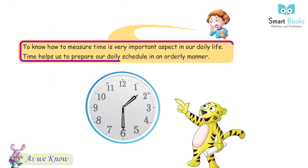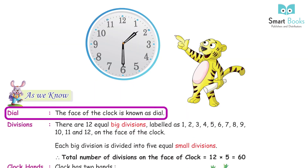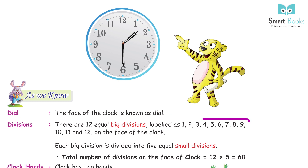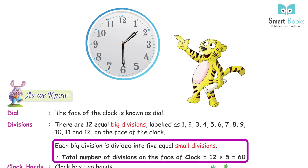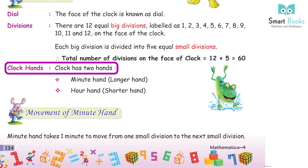To know how to measure time is very important in our daily life. Time helps us to prepare our daily schedule in an orderly manner. The face of the clock is known as the dial. There are 12 equal big divisions labeled 1 through 12 on the face of the clock. Each big division is divided into 5 equal small divisions. Total divisions on the face of the clock equals 12 × 5 = 60.